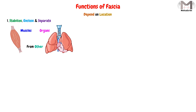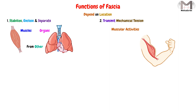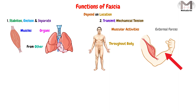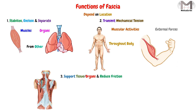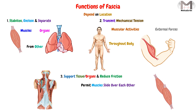The second function is that the fascia will transmit the mechanical tension that is produced by muscular activities or by external forces throughout the body. The third function is that the fascia will support tissue and organs, and reduce friction between muscles and other structures — meaning the fascia will permit the muscles to slide over each other easily with low friction.